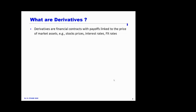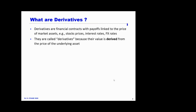Let me talk very briefly about what derivatives are. Derivatives are financial contracts with payoffs linked to the price of market assets. You can think of the payoff as some sort of mathematical function, where the inputs are the prices of the underlying assets. It's called a derivative because the value of the financial contract is derived from the price of the underlying asset — it has nothing to do with first derivatives in mathematics.